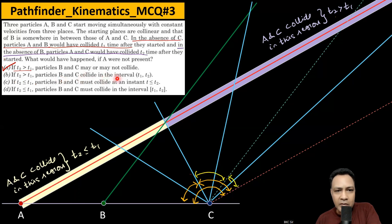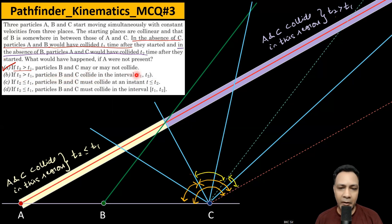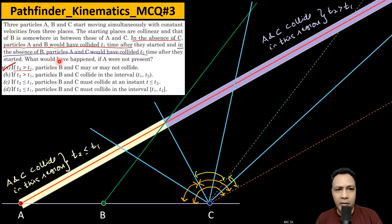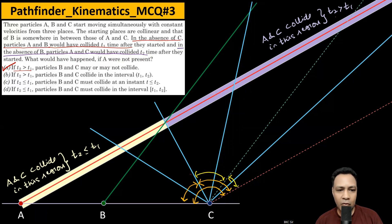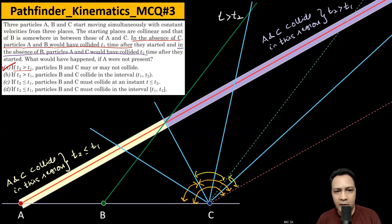For the interval t2 greater than t1, investigating whether B and C collide: if C moves in the region where B-C collision is possible, one trajectory of C shows that A and C collide at time t2. A moves its path, C moves its path, they collide here at time t2. The collision of B and C happens later, so the time must be more than t2. But the option states the interval is t1 to t2 — meaning less than t2 — so this option is incorrect.